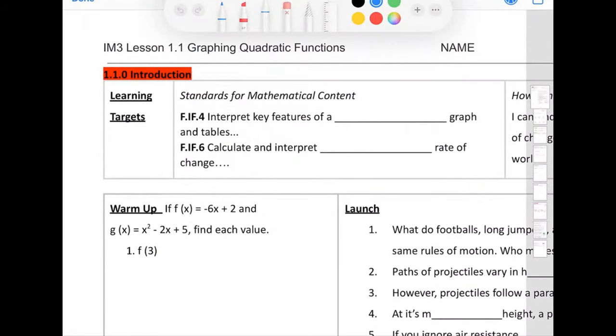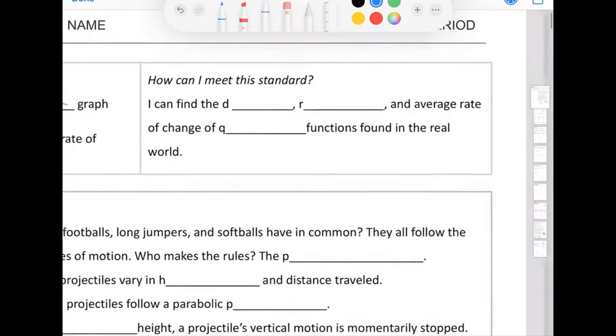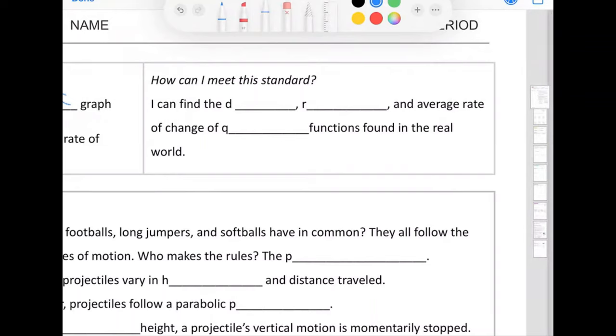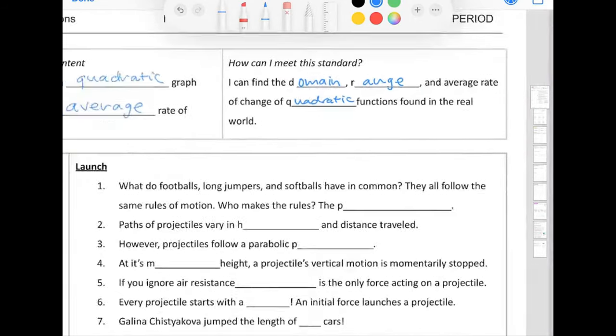Our learning targets are standards for mathematical content: interpret key features of a quadratic graph and tables, and calculate the average rate of change. How can I meet this standard? I can find the domain, range, and average rate of change of quadratic functions found in the real world.